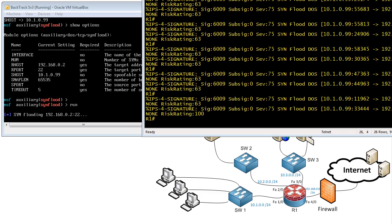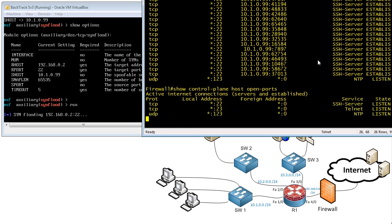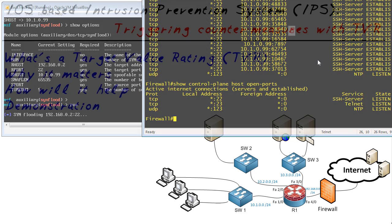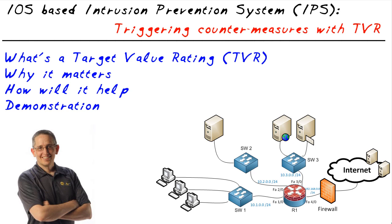One last thing to check: let's go over to the firewall. I have a TCP timeout set for five seconds, so if it's been more than five seconds, none of those open ports should be showing up anymore — and sure enough, they're all gone. To learn more about configuring iOS-based IPS, visit our CBT Nuggets CCNA Security course. If you have interest in Metasploit or the Backtrack suite of tools, check out our new Backtrack series as well. I hope this has been informative, and I'd like to thank you for viewing.